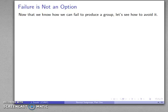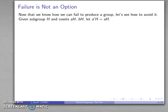So now that we know how we can fail to produce a group, let's see how we can avoid it. So I have some subgroup H and I have cosets aH, bH and so on, and I'm going to let a'H and aH be the same coset.